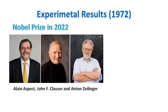In 1972, John Clauser and Stuart Friedman, using photons, performed the first experiments proving that the Bell inequality is violated. In the following years, other research teams led by Aspect first, and then Zeilinger, confirmed the results. In 2022, Aspect, Clauser and Zeilinger were awarded the Nobel Prize for proving that the Bell inequality is violated. Einstein was wrong and quantum mechanics is safe. Thanks for watching.